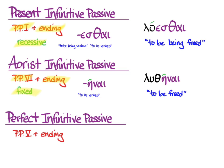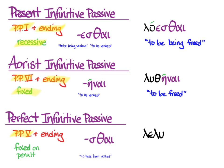Finally, the perfect infinitive passive comes from the fifth principal part, as does everything perfect and passive. The ending is simply -sthai. Accent is fixed on the penult, so that will be an acute if it's a short vowel, or a circumflex over a long vowel or diphthong. The default translation is 'to have been verbed.' So you take your principal part five stem lalu, add the ending -sthai, put the accent over the penult, and you get laluesthai — 'to have been freed.'